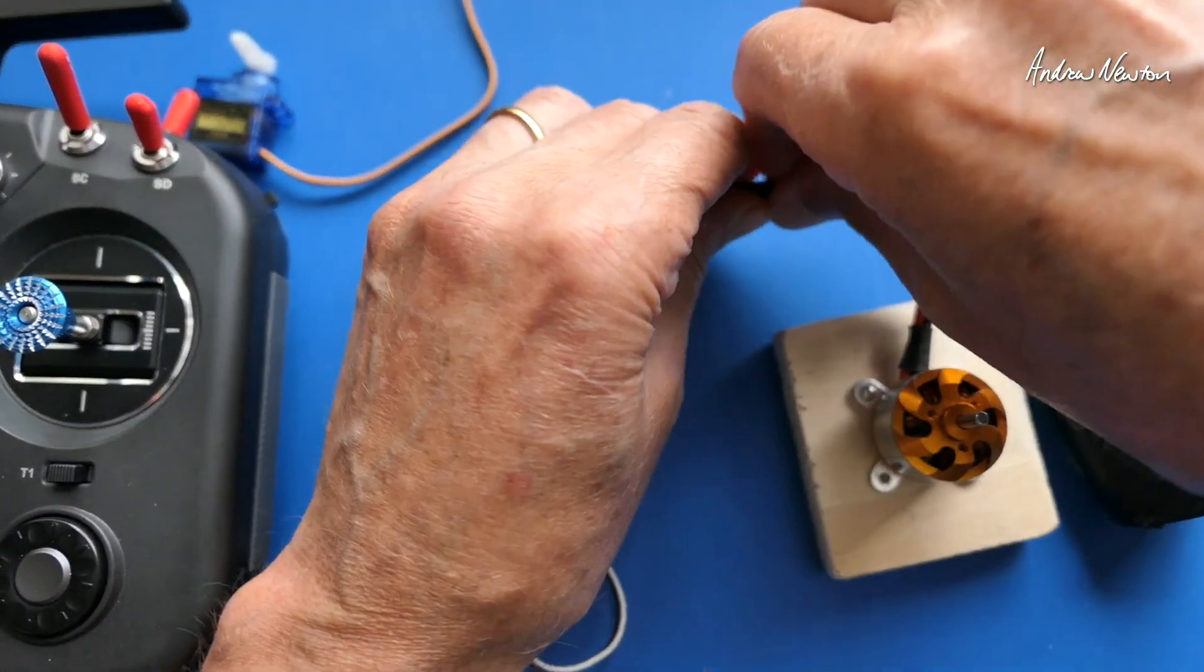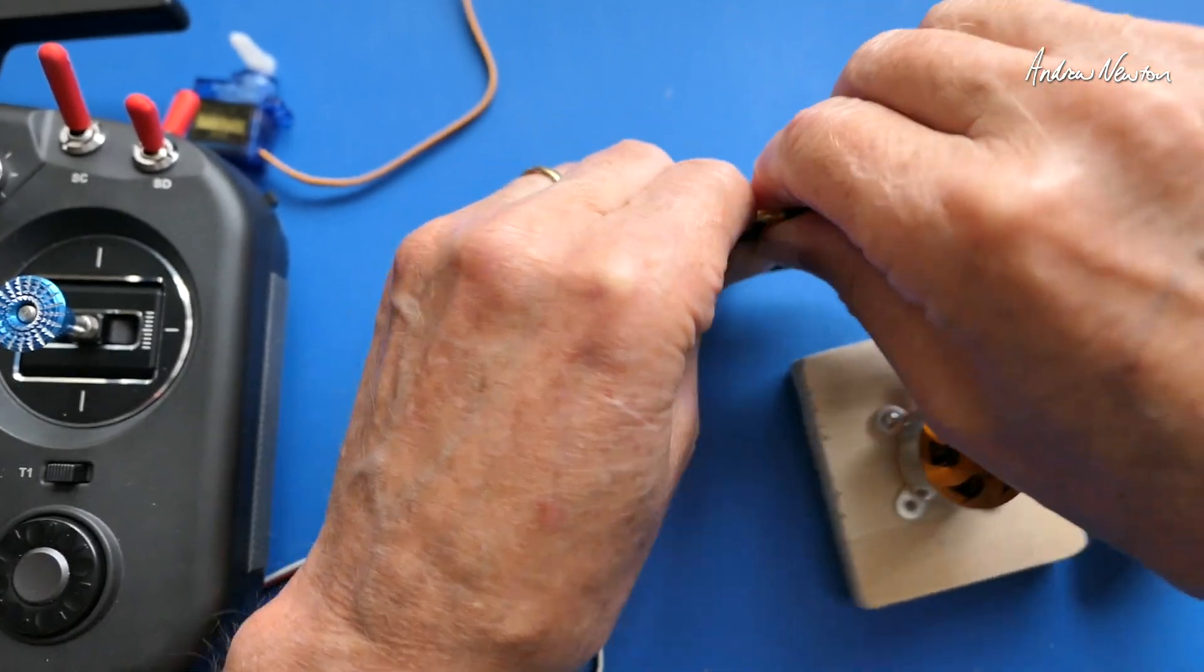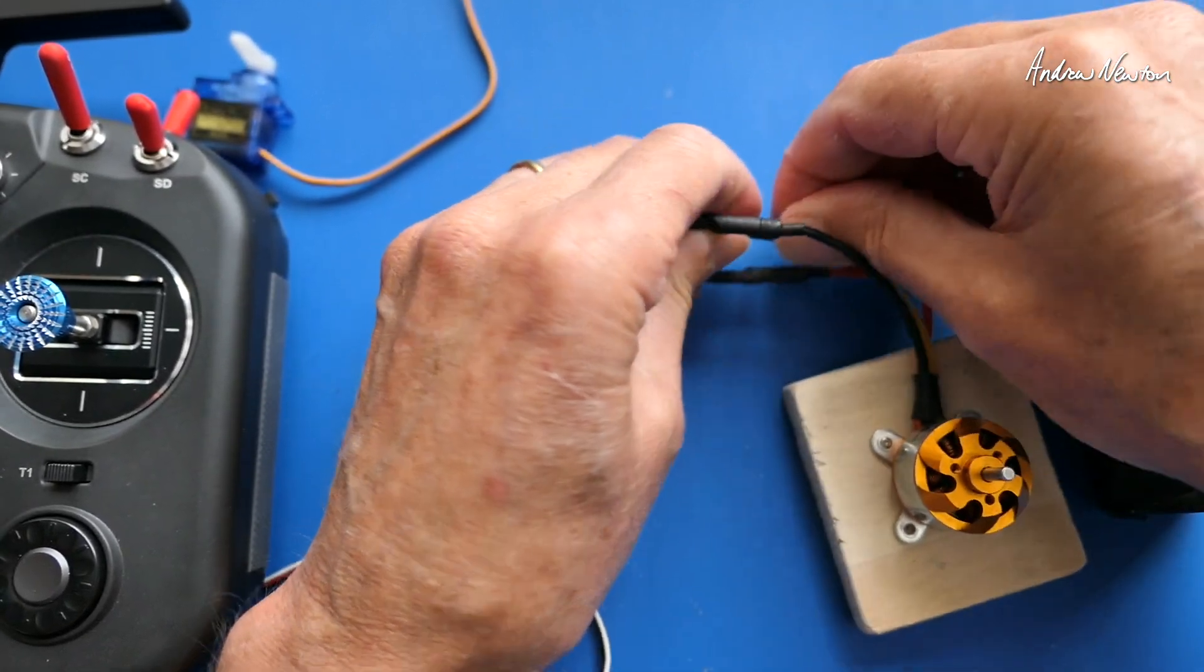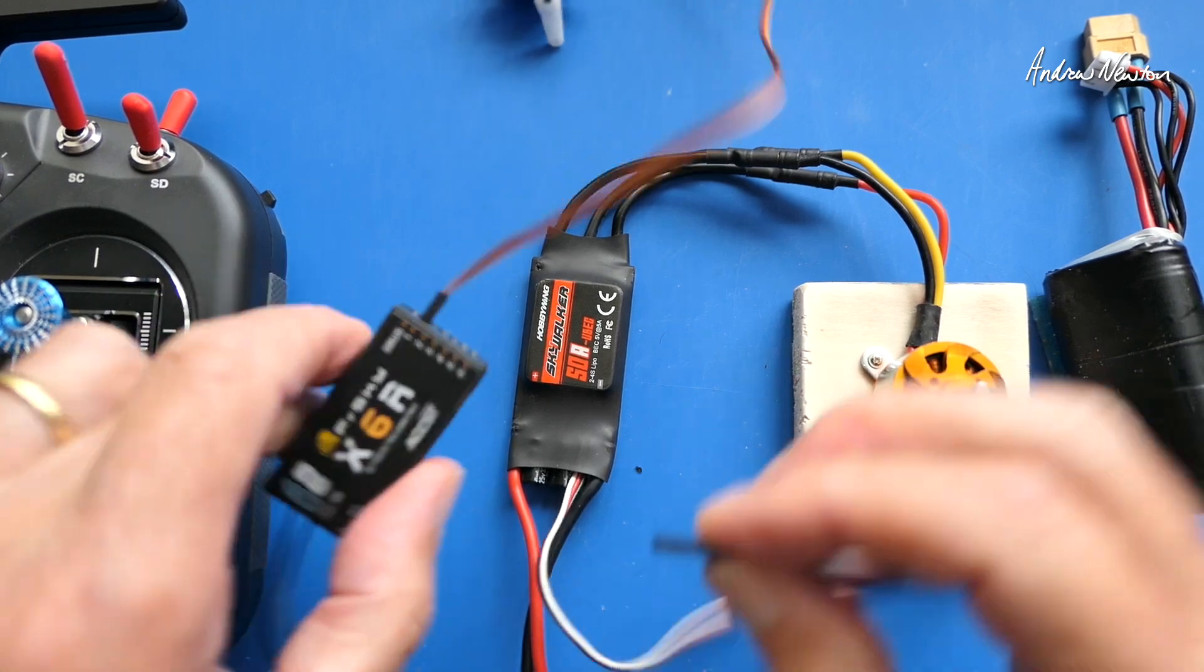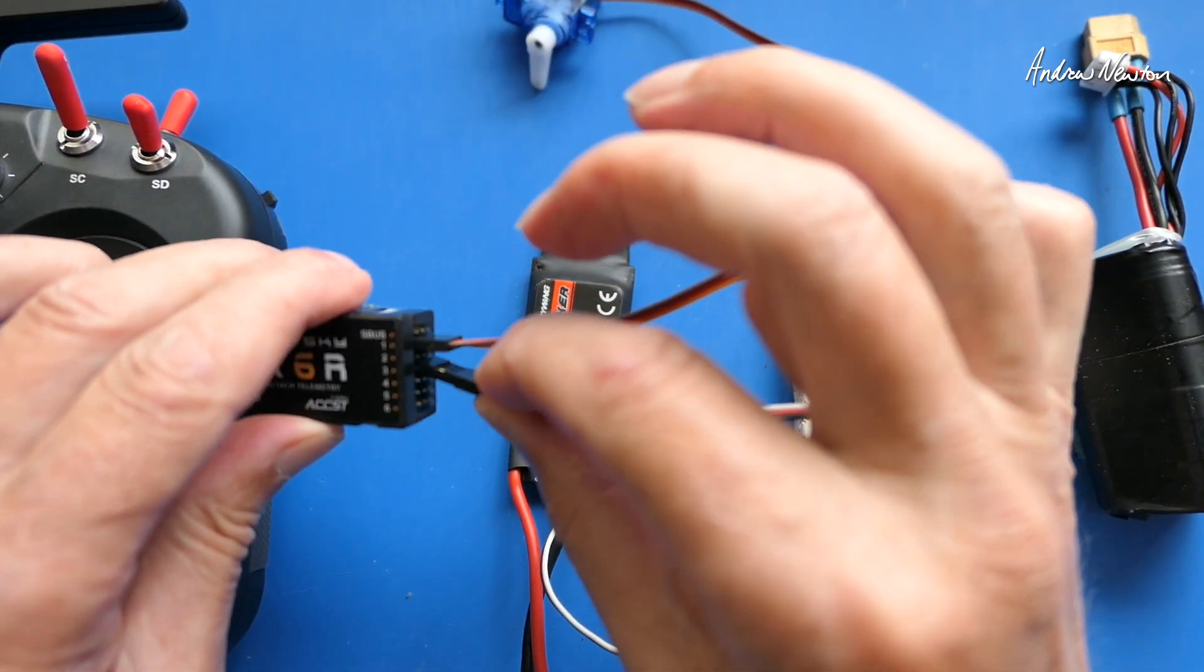The ESC sends a sort of a rotating field through the three wires and that spins the motor energizing electromagnetic coils which are attracted to magnets in the motor. And the motor can spin two ways. All we have to do to reverse the motor is swap two of these wires and it will happily spin in the other direction.